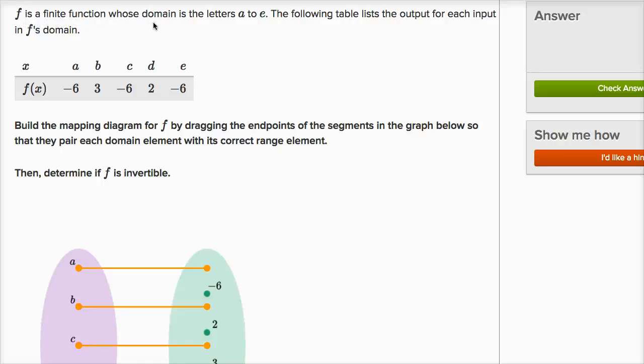F is a finite function whose domain is the letters A to E. The following table lists the output for each input in F's domain. So if X is equal to A, then if we input A into our function, we output negative six. F of A is negative six.